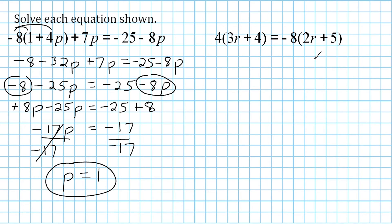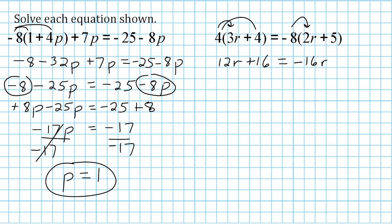For this second problem, we have to distribute on both sides of the equation. We take 4 and multiply it by 3r, which is 12r, and 4 times 4 is 16. So 12r plus 16 equals negative 8 times 2r, which is negative 16r, and negative 8 times positive 5, which is negative 40.